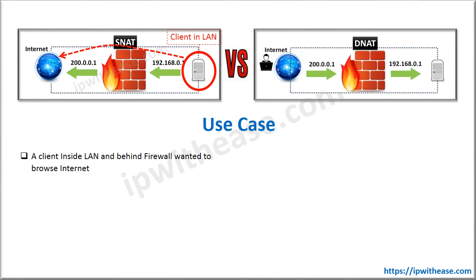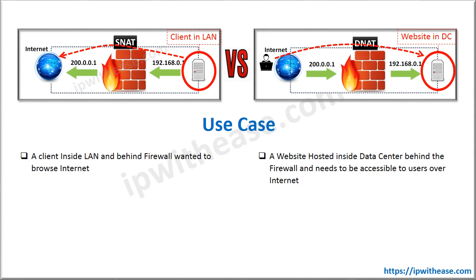Use case: In the case of SNAT, when a client sitting inside the LAN of a data center wants to access the internet — that is, browse it — SNAT is leveraged for that communication to happen. The use case for DNAT is when a website is hosted inside a data center behind a firewall and needs to be accessed by users over the internet. In that case, DNAT — that is, Destination NAT — is used.